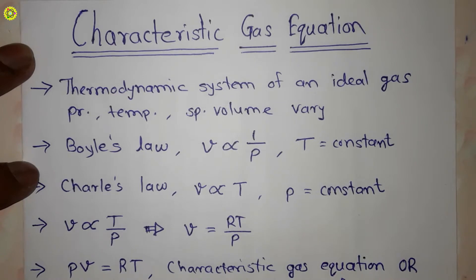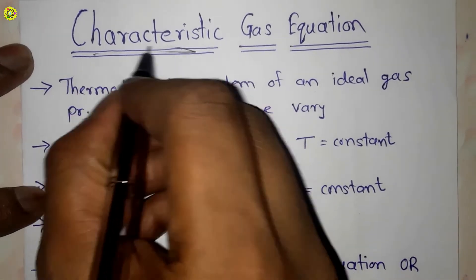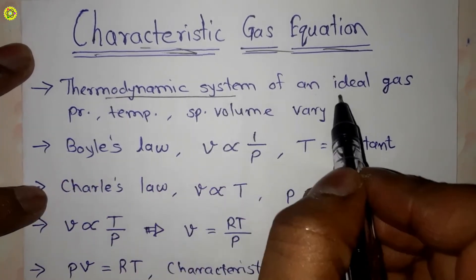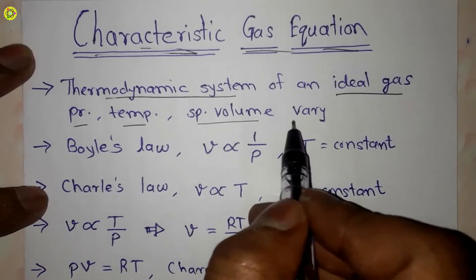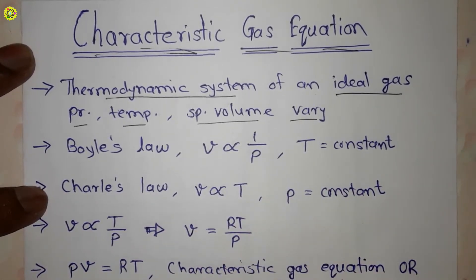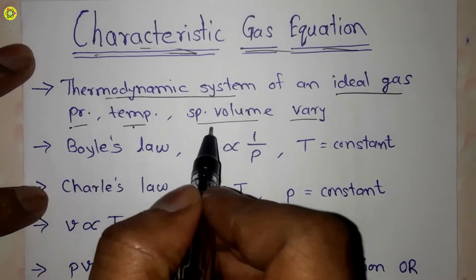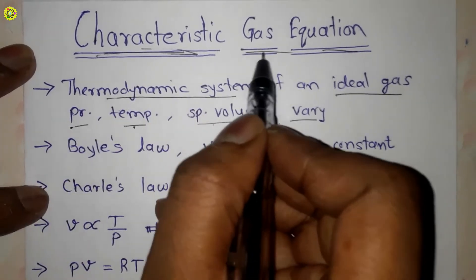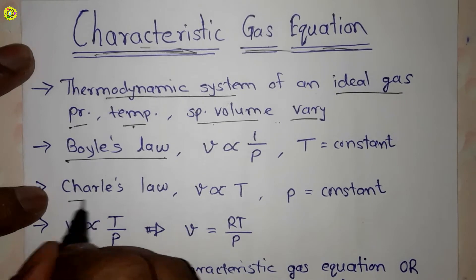Hi students, welcome. In this video we will study about the characteristic gas equation. In any thermodynamic system of an ideal gas, pressure, temperature, and specific volume vary simultaneously. On the basis of pressure, temperature, and specific volume, we derive the characteristic gas equation with the help of Boyle's law and Charles' law.